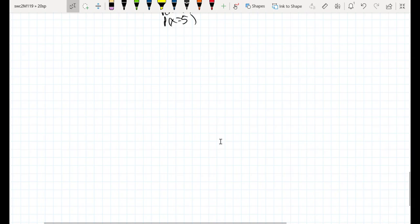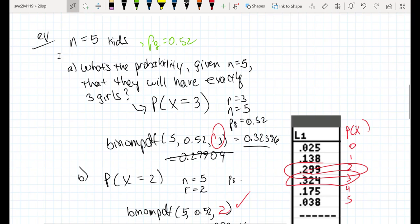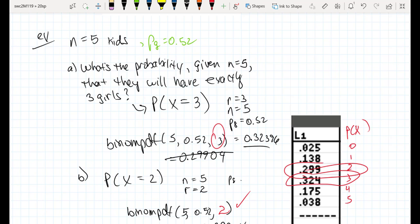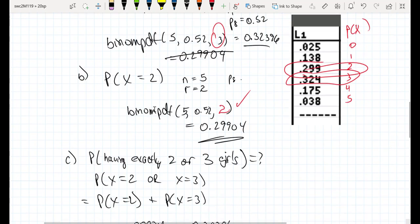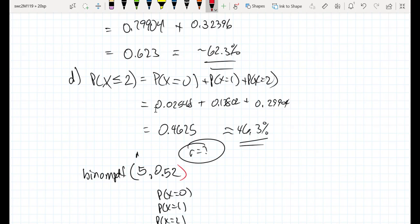All right, so in the previous discussion, we were able to answer questions such as this, where we wanted to figure out the probability of, given some number of trials, what's the probability of having some number of successes.